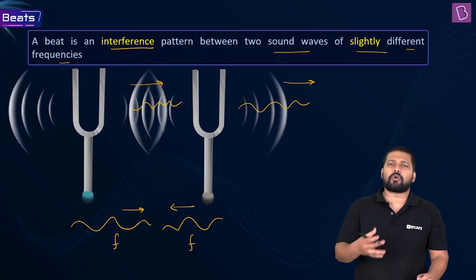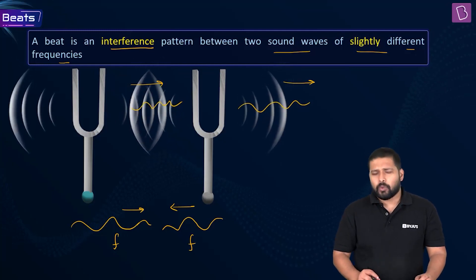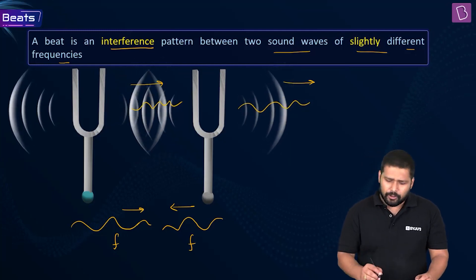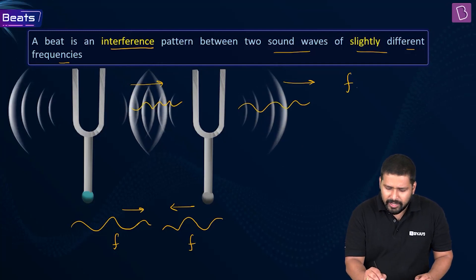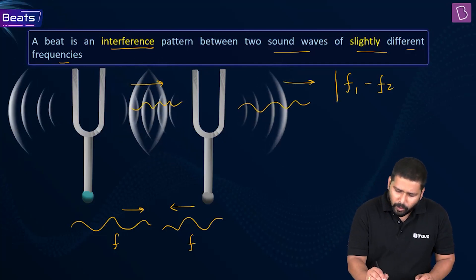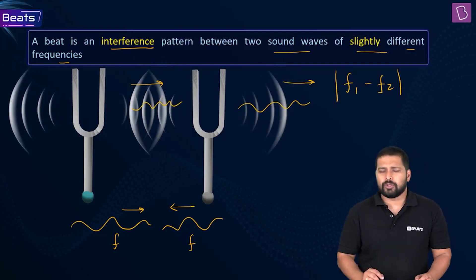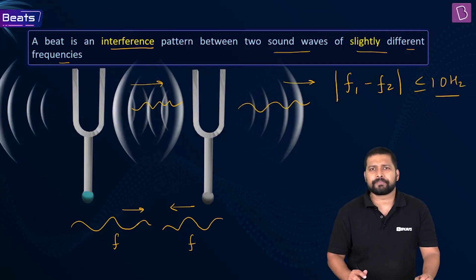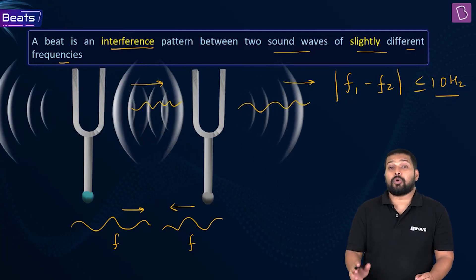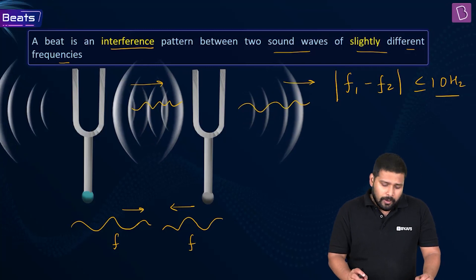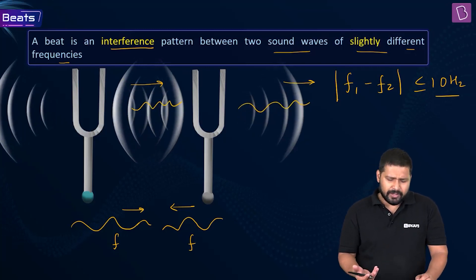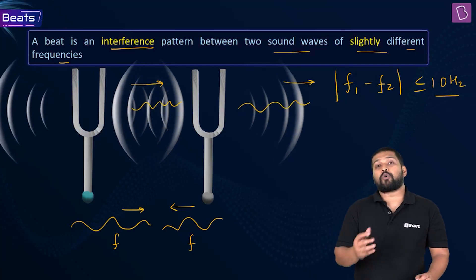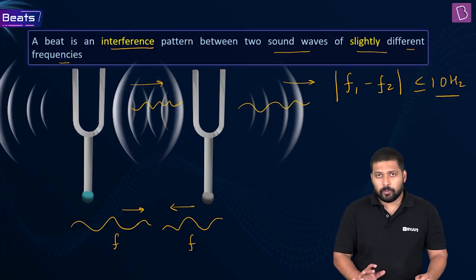Different books quote different values, but we will take the standard value: the difference in frequency |F1 − F2| should be less than or equal to 10 Hz. If it is more than that, you are not going to hear the beat. Also, for beats, we take the amplitude for both waves to be the same.